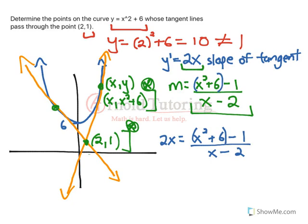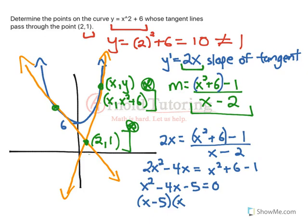And then we just solve. So I'm going to cross multiply, and we get 2x squared minus 4x equals x squared plus 6 minus 1. Everything to one side because it's a quadratic. This will be x squared minus 4x minus 5 equals 0. Factor, and we get (x minus 5)(x plus 1) equals 0, so x must equal 5 or negative 1.